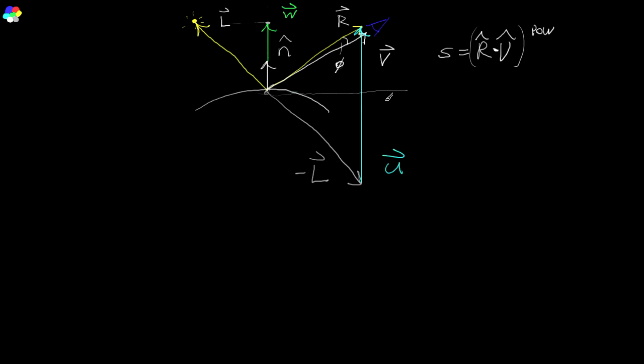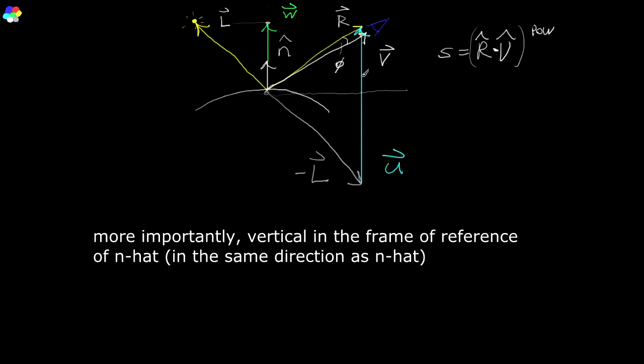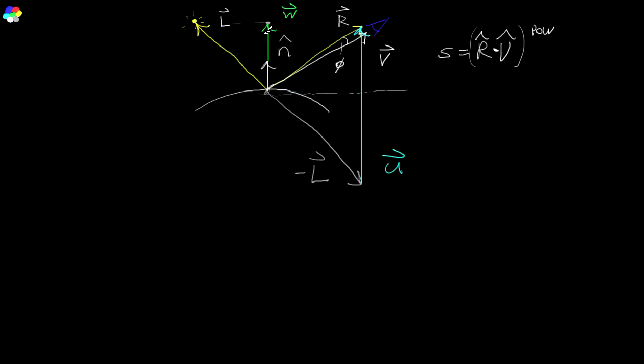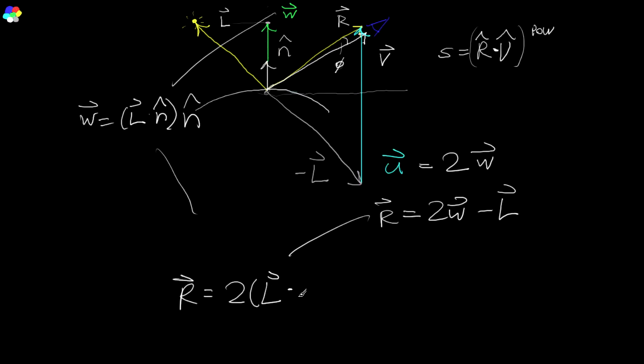So what is U? Let's draw a little line here. So we can see that U is a vertical vector and it is actually going to be twice as long as W, which is the projection of L into this normal. And then we scale the normal by that amount. So U is actually equal to 2 times W. And there we go. We've actually got the solution because we know that if we add negative L to U, we get R. So we can say R is equal to 2W minus L. W is equal to L dot N hat times N hat. If we put it all together, R is equal to 2 times L dot N hat times N hat minus L. And there you go. You have got the formula for your reflected vector.